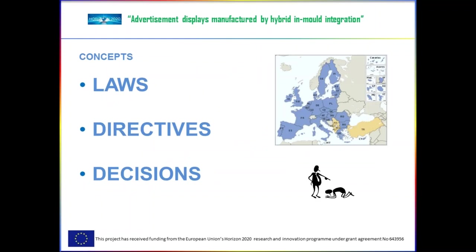We have to take into account different concepts. First, laws, which are directly applicable and do not need to be transcribed into national laws. Secondly, directives, which seek to approximate national legislation but not the unification of community laws. They are binding on their ends but not on their means, and are usually addressed to member states. And finally, decisions, which are commonly individual, addressed to companies or citizens, and are binding in all of their contents.